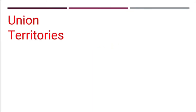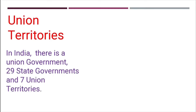Now let us learn about Union Territories. In India, there is a Union Government — that is a Central Government — which looks after the entire country. There are 29 State Governments and 7 Union Territories. The Union Government controls the Union Territories. The Union Territories do not have a separate power of their own; the Union Government rules them.